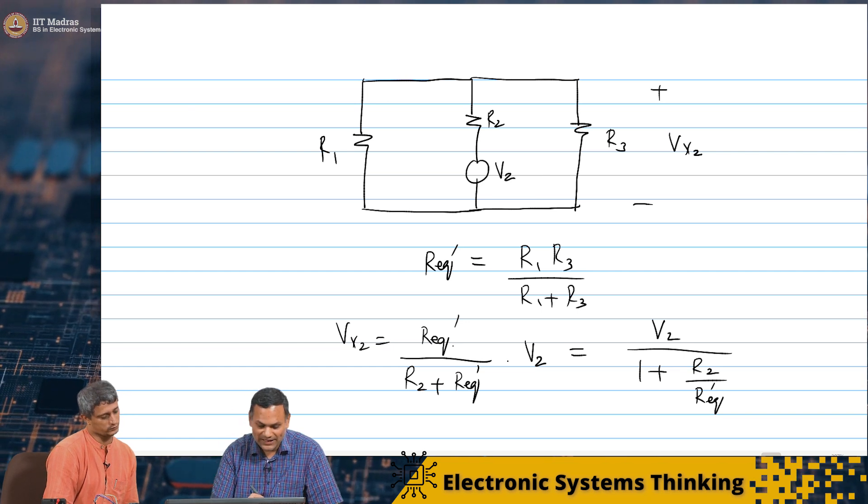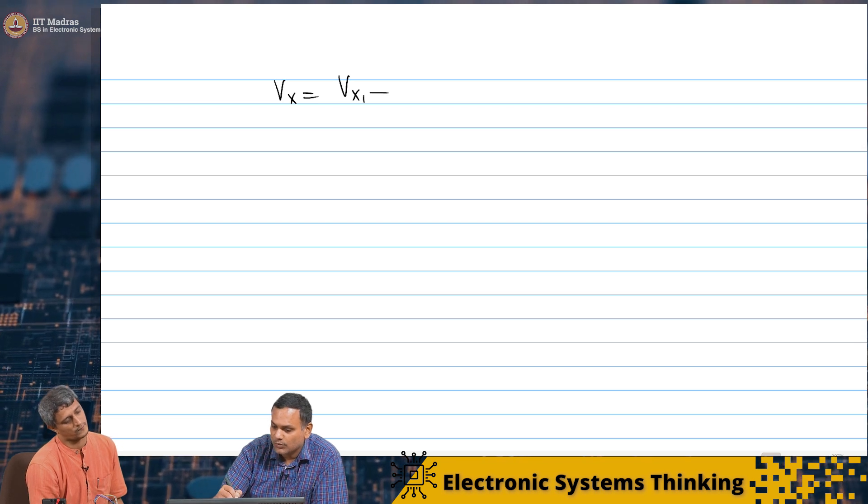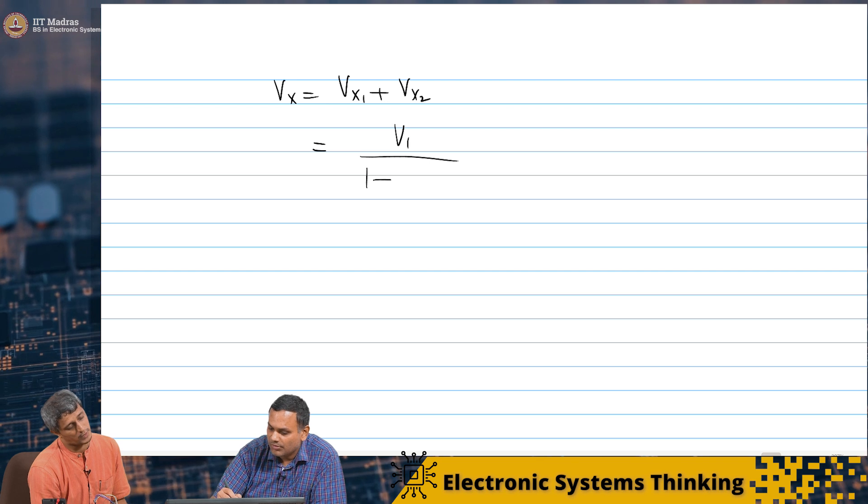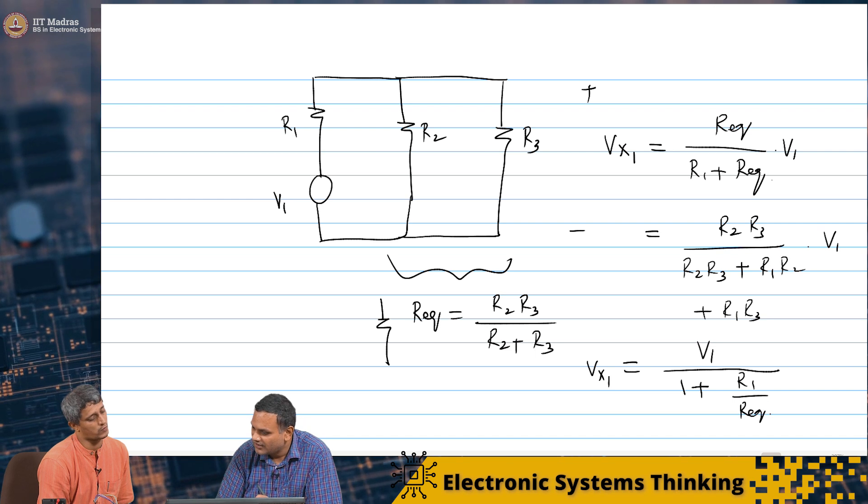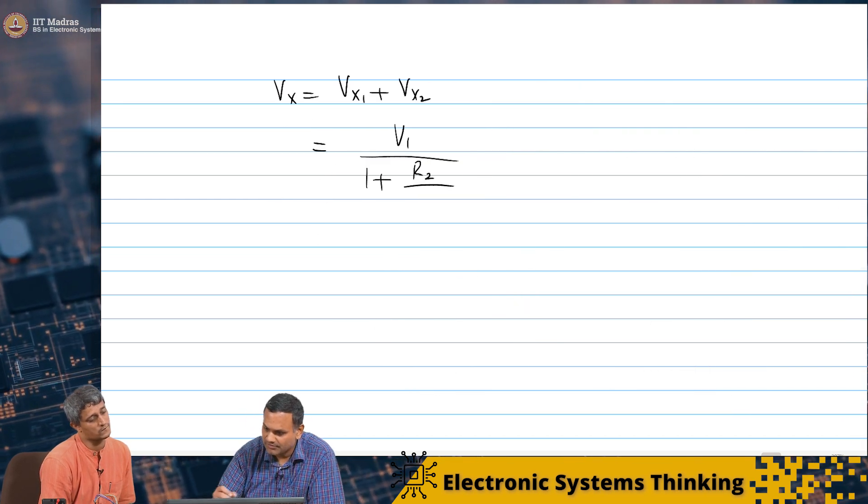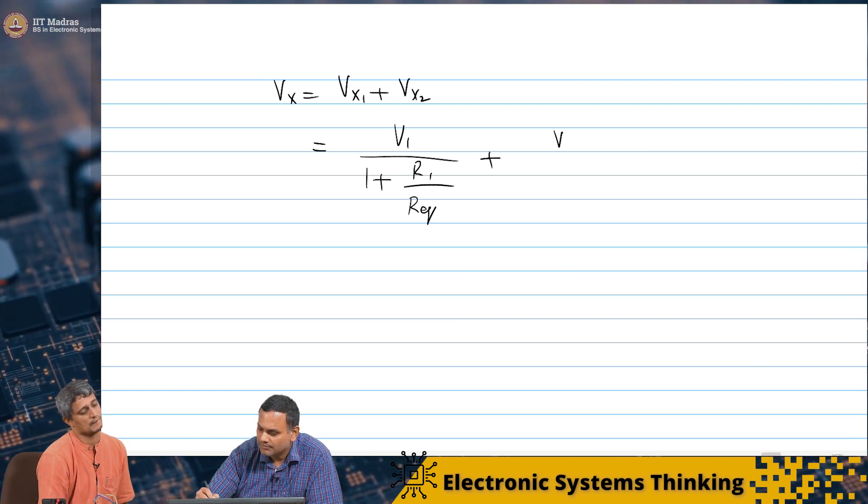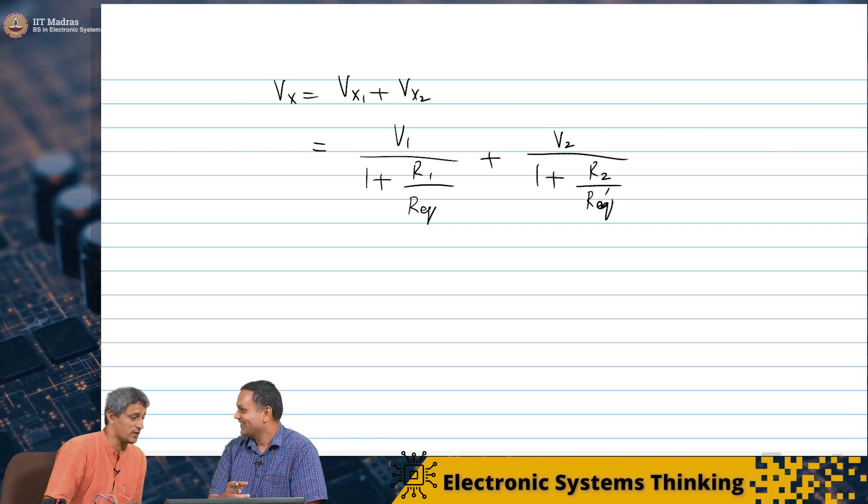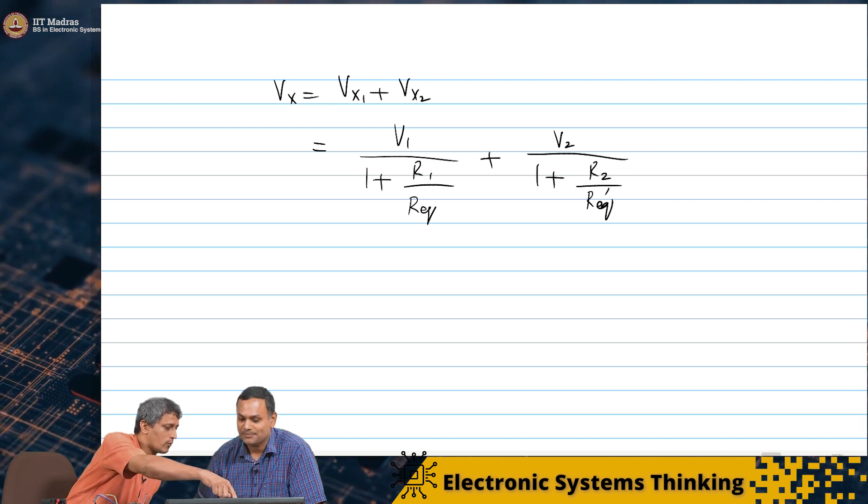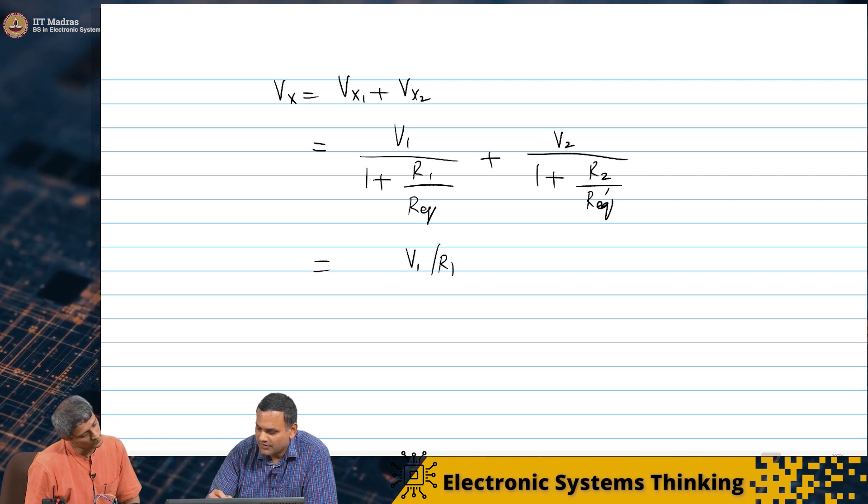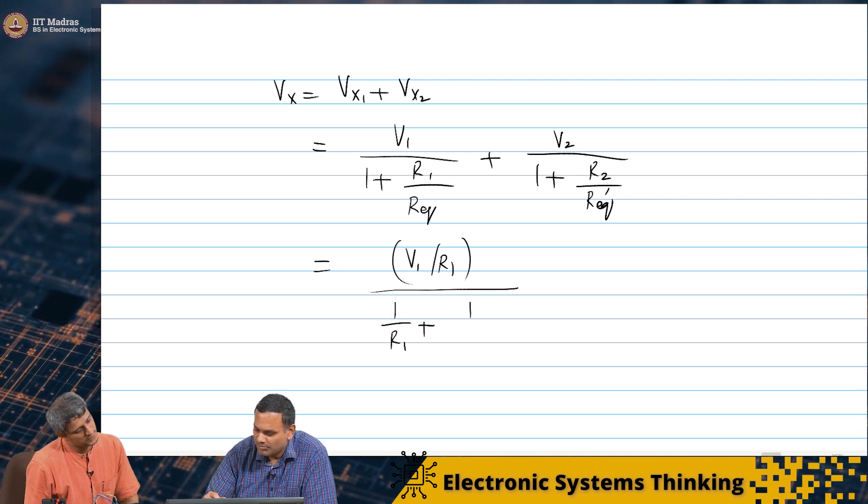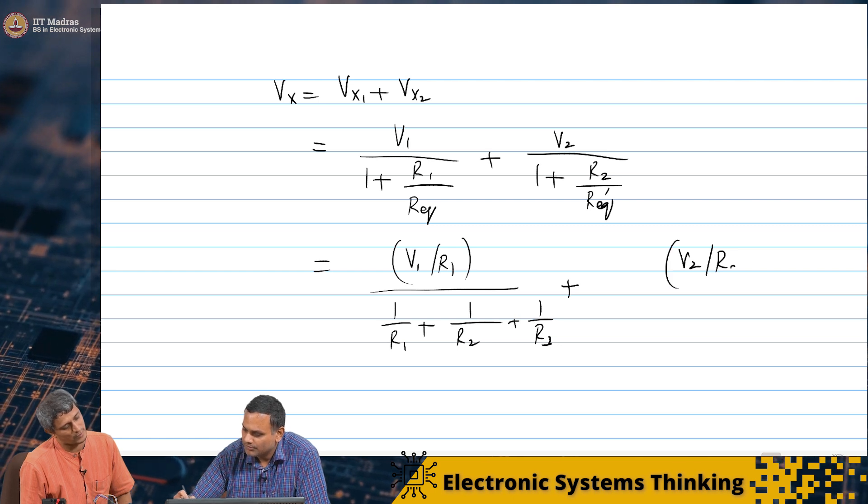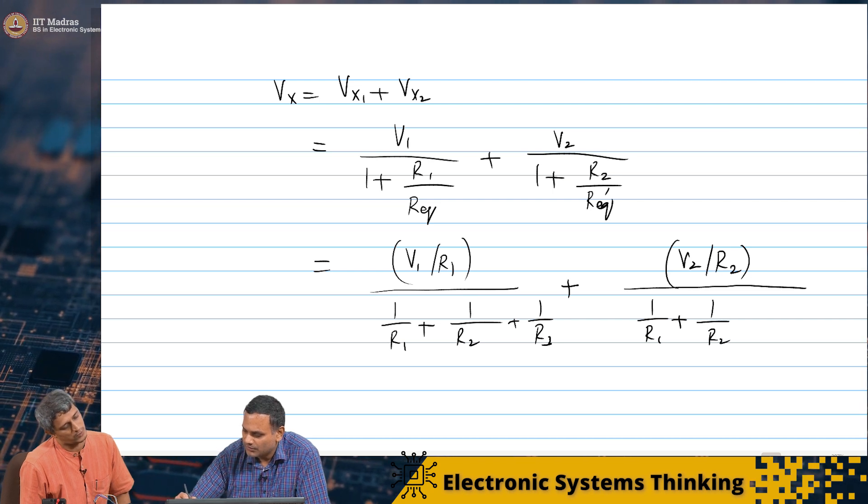Now what we are saying is that if you actually put in both, Vx is Vx1 plus Vx2. Now I see the mixing. You see the mixing. In fact, I would say you pull out Vx1 by Rx1 and Vx2 by Rx2. Correct. This will become V1 by R1 by 1 by R1 plus 1 by R2 plus 1 by R3. Exactly. Plus similarly V2 by R2 by 1 by R1 plus 1 by R2 plus 1 by R3.